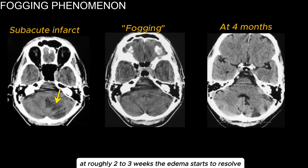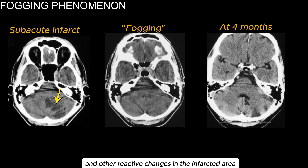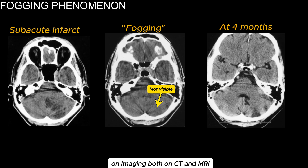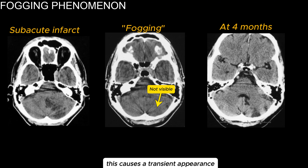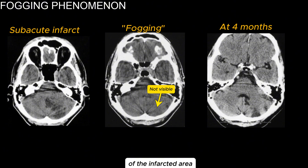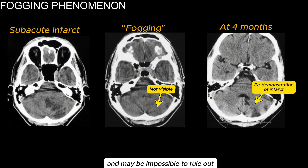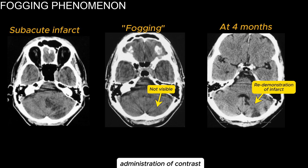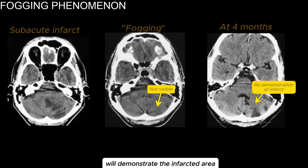At roughly 2 to 3 weeks, the edema starts to resolve while there is an increased infiltrate of macrophages and other reactive changes in the infarcted area. This may cause a normalization of the infarcted area on imaging, both on CT and MRI. This fogging phenomenon is seen in roughly 50% of patients. It causes a transient appearance and may give a false impression of the extent of the infarcted area, making it impossible to rule out if the patient presents within this timeframe. If in doubt, administration of contrast will demonstrate the infarcted area.